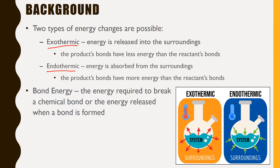Bond energy is the energy required to break a chemical bond, or the energy released when a bond is formed — it's a two-way street. The energy that went into making the bond and the energy released when the bond is formed is the same amount of energy one way or another.